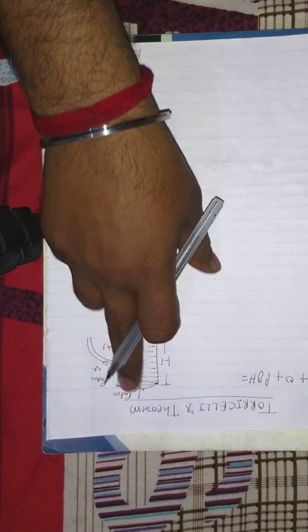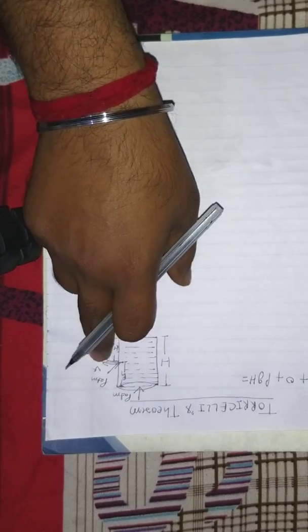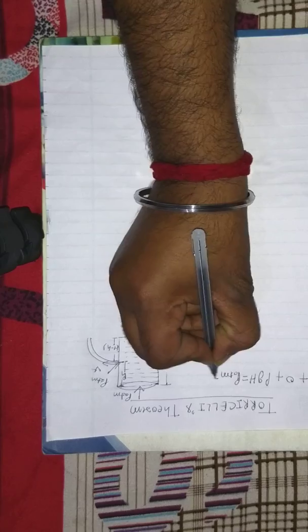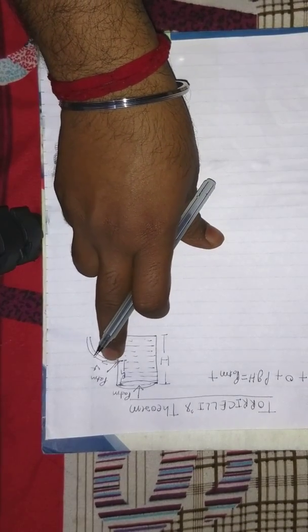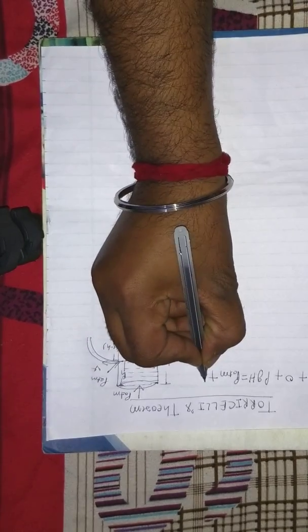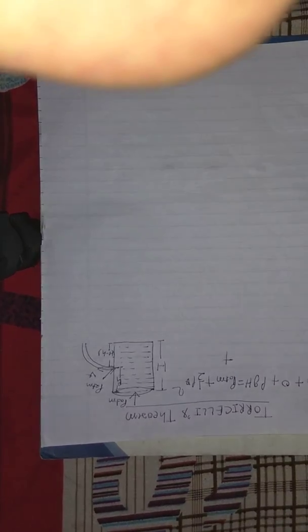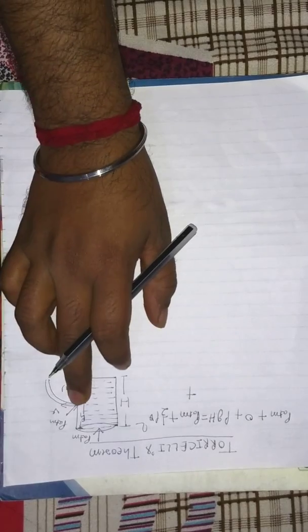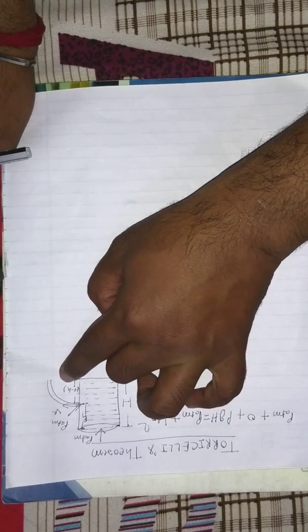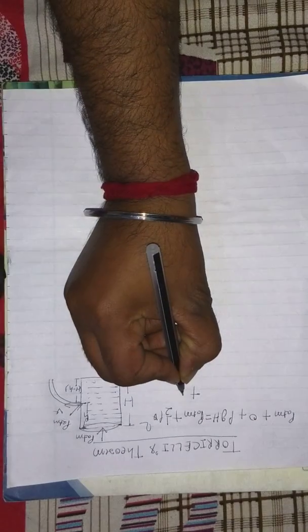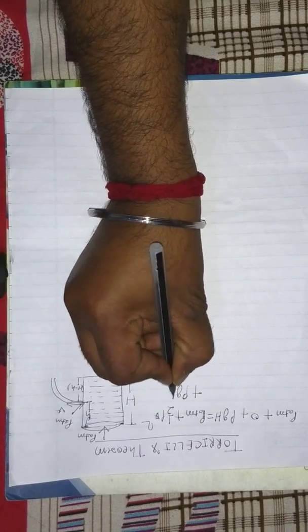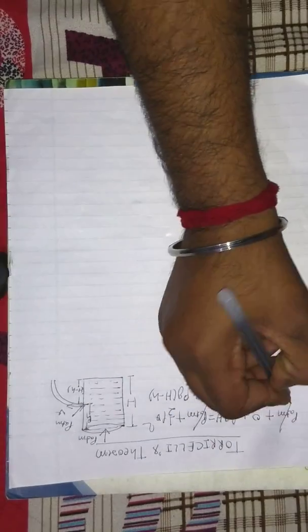Since both surfaces are open to the atmosphere, the pressure at the hole is also P_ATM. The liquid coming out of the hole has velocity V, so its kinetic energy per unit volume is half rho V squared. The potential energy per unit volume at the hole corresponds to the height (H minus h), so it is rho × g × (capital H minus small h). The P_ATM terms cancel from both sides.